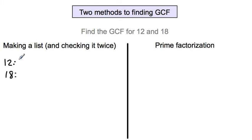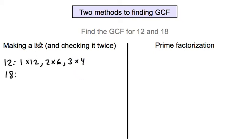Listing out all the factors of 12: you have 1 and 12, 2 times 6, 3 times 4. Make sure that if you're doing listing, you list every factor. Sometimes there are factors not on the multiplication chart that you have to do some problem solving for. In this case, all of the factors of 12 are on our multiplication chart, so those should be in your brain.